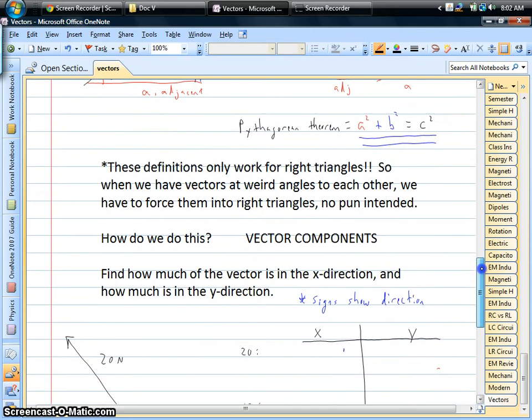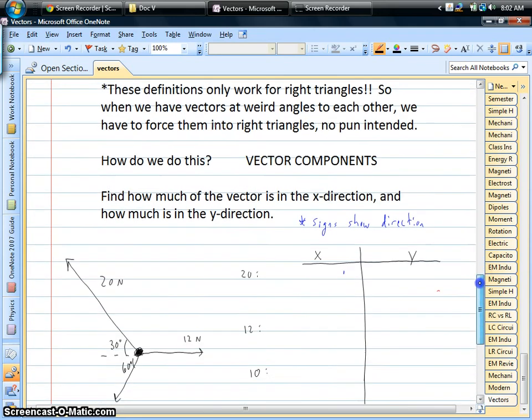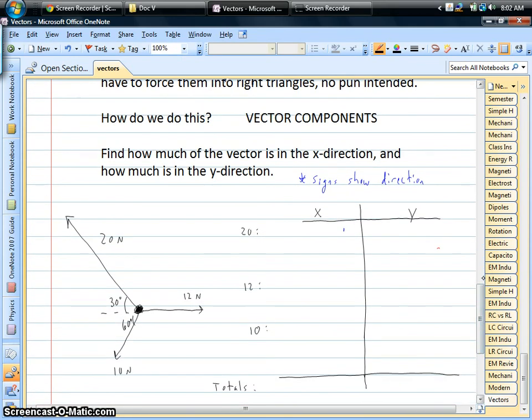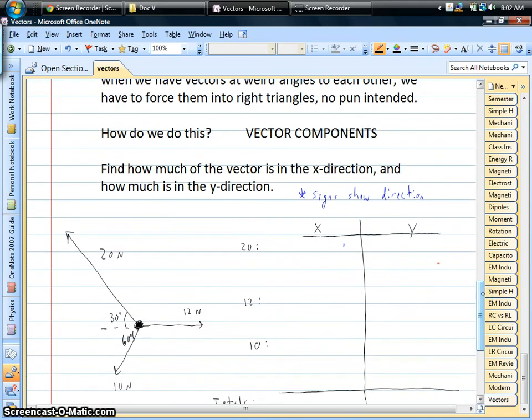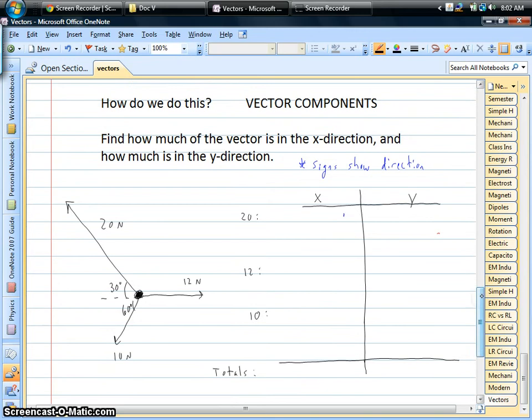Alright, so vector components. Those are the pieces I just mentioned. When you have something that looks like this, three people pulling at different angles, not necessarily right angles, we have to try to make this picture look different. We have to make everything into right angles, where we can apply these rules and be able to solve it. So what we have to do is think in terms of, well, how much of each individual vector is trying to pull you in an x direction, and how much of it is trying to pull you in a y direction. And that's where the right triangles come in.